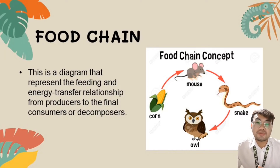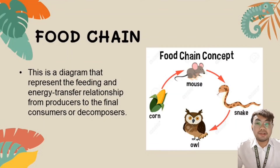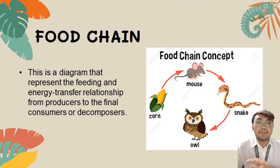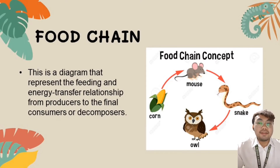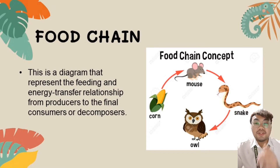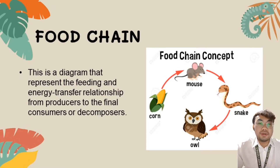Here in this example, the mouse eats the corn. Then the snake eats the mouse. And the mole eats the snake. And when the mole dies, fungi and other microorganisms will break the body down and turn it into nutrients. The nutrients, along with sun and water, cause the plants to grow.